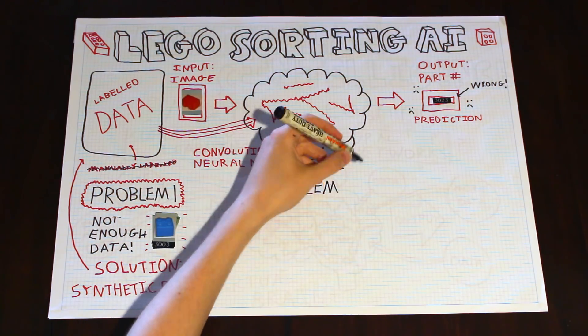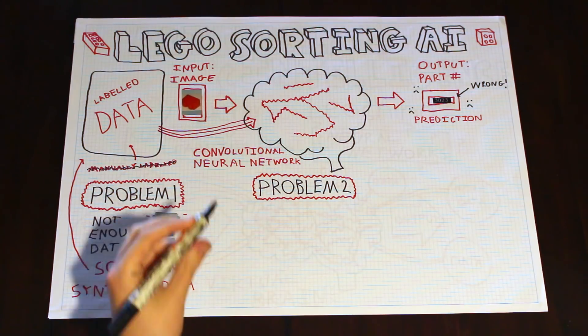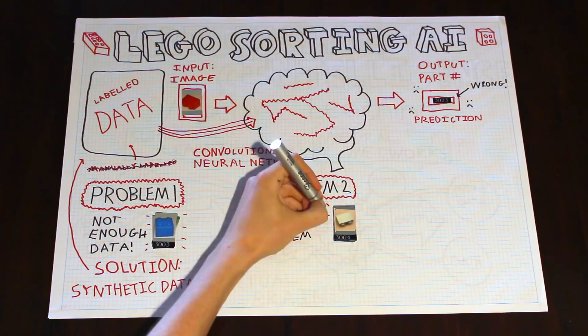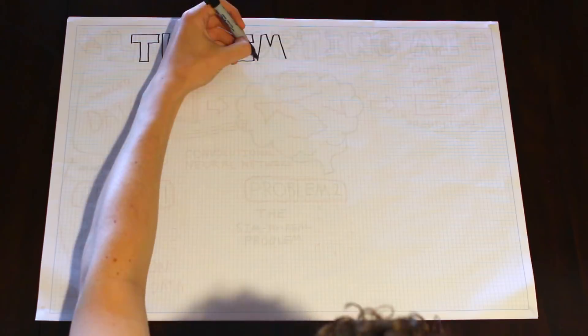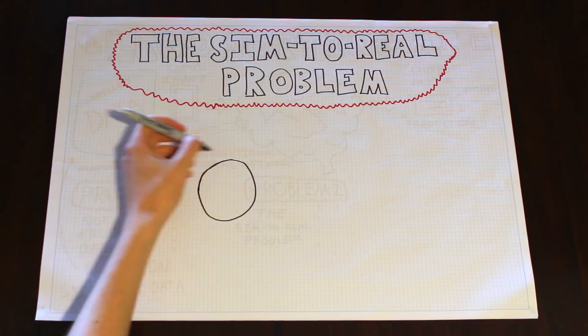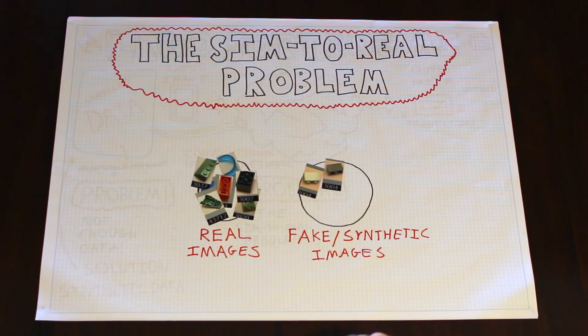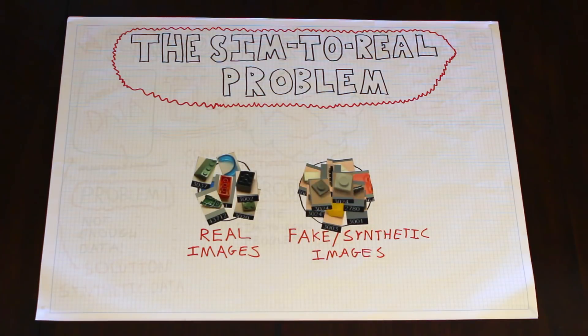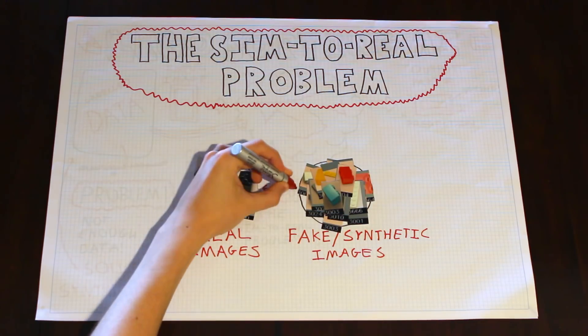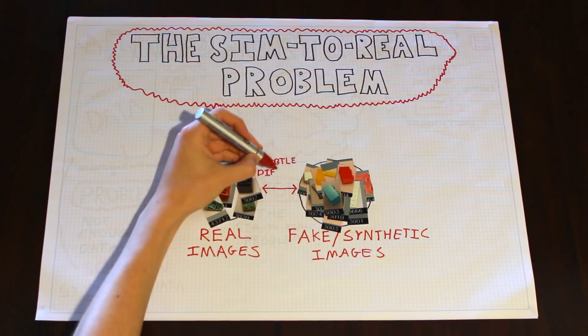We're running into something called the simulation-to-reality gap or the sim-to-real problem. And here's the problem. The real images all look similar to each other due to the physics and lighting conditions in the real world. The fake images try to match the real ones as closely as possible. But there are subtle differences in things like lighting, shadows, color, and texture.